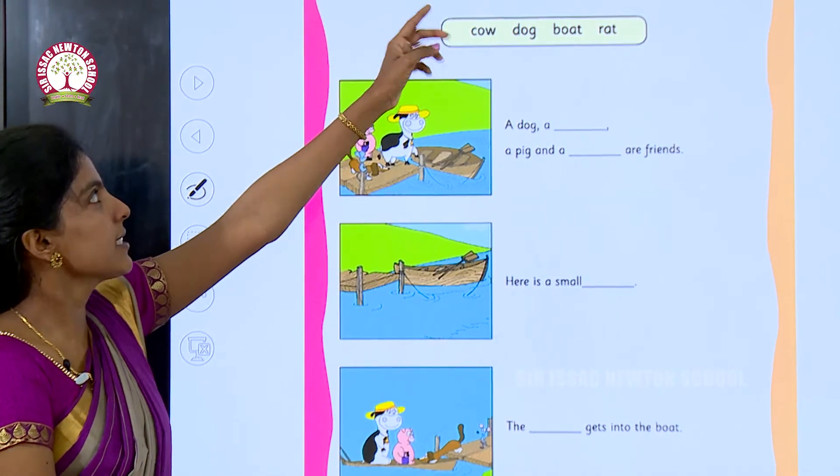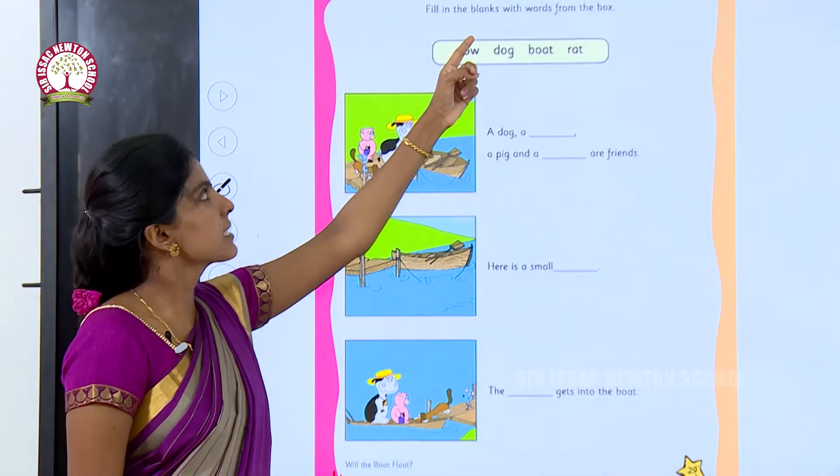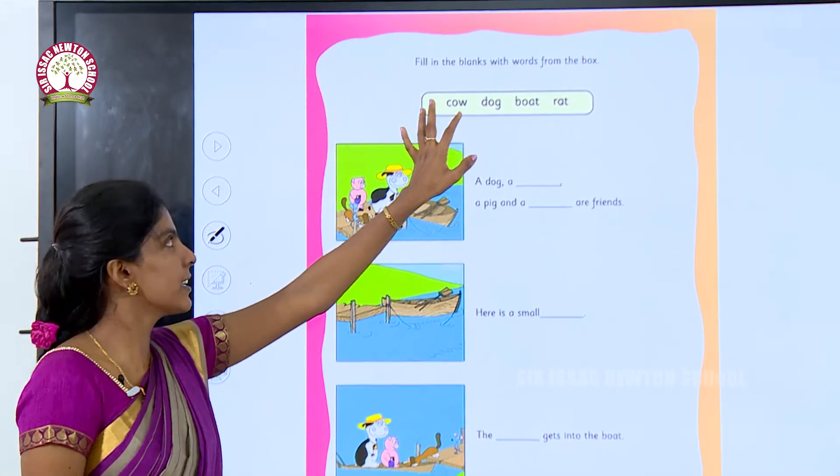Today we are going to see a new exercise related to the story Will the boat float? Fill in the blanks with words from the box. What are the words given in the box children?